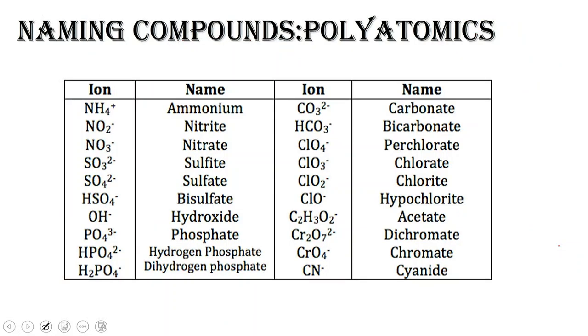Here we have the polyatomic ions, the ones that you should know. I'm going to say all of them, but I'll be nice. And these are the ones that you should specifically know. So let's say hydroxide is a big one, phosphate, carbonate, bicarbonate, acetate, chromate, cyanide. These are all really important for you to memorize.